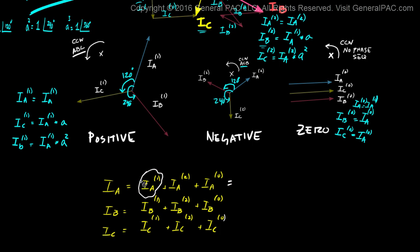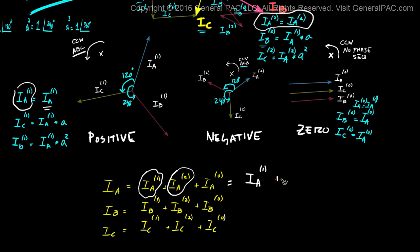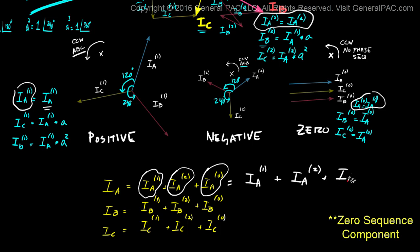What if we take advantage of the fact that the positive and negative sequence components are balanced, and use the A operators to reduce the number of variables? For IA: IA positive sequence is the reference, so no shifting needed. IA negative sequence is also used as reference, no shifting. And IA zero sequence similarly needs no shifting. So IA equals IA positive sequence plus IA negative sequence plus IA zero sequence.